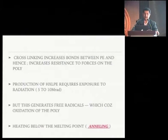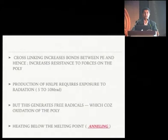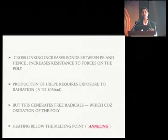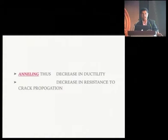The production of highly cross-linked poly requires radiation exposure of 5 to 10 megarads, but this generates free radicals causing oxidation of the poly. The best way to reduce free radicals was to heat it below its melting point at 135 degrees Celsius — that process is called annealing. These polys are heated to just below the melting point so that free radicals are removed, which decreases ductility and also decreases resistance to crack propagation.